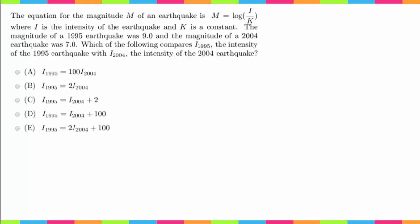The magnitude of a 1995 earthquake was 9.0, and the magnitude of a 2004 earthquake was 7.0. Which of the following compares the intensity of the 1995 earthquake with the intensity of the 2004 earthquake? Sorry, I kind of skipped some words there, but you got the idea.